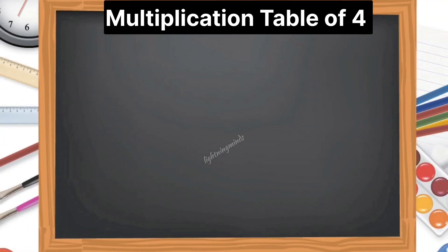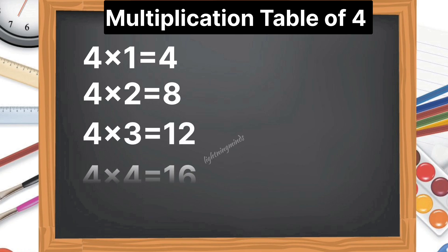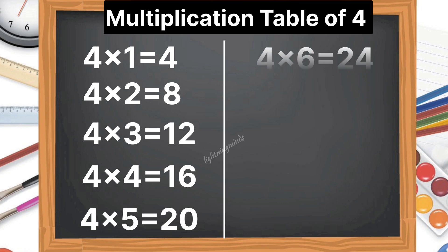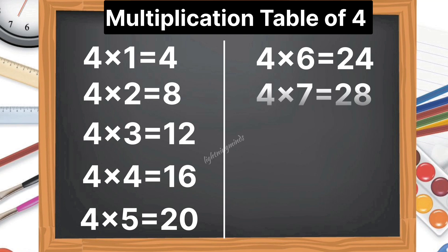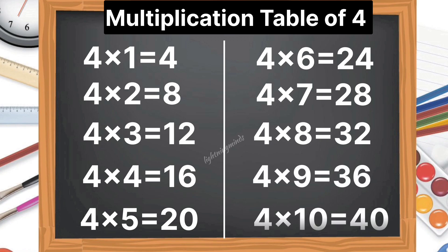Multiplication table of 4. 4 1s are 4, 4 2s are 8, 4 3s are 12, 4 4s are 16, 4 5s are 20, 4 6s are 24, 4 7s are 28, 4 8s are 32, 4 9s are 36, 4 10s are 40.